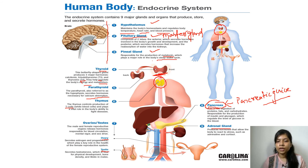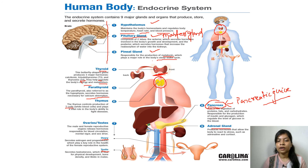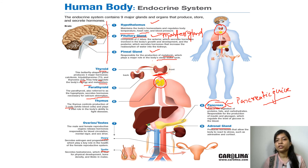Lastly, we have the gonads: in males it is the testis and in females it is the ovary. They help in the production of various reproductive hormones. The testes produce sperm and the ovary produces ova for reproductive activities. These are the examples and functions of the endocrine system present in the human body.